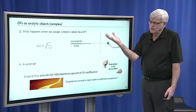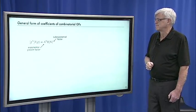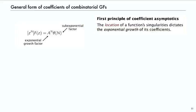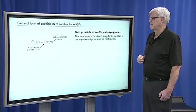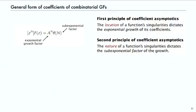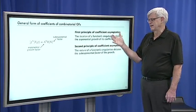In general, the combinatorial generating functions we're examining are functions in the complex plane with positive coefficients since we're counting things. They have an exponential growth factor and a sub-exponential factor. The first principle is that it's where the singularities are that dictates the exponential growth. The second principle is that the nature of the singularities dictates what the sub-exponential factor looks like, and there are different kinds of singularities in the complex plane — not too many, but a few.